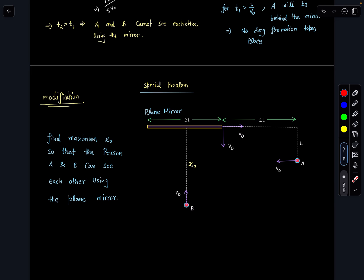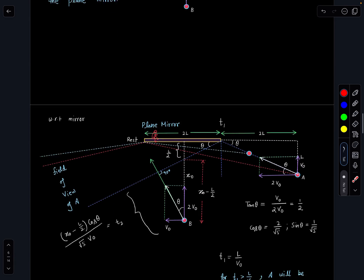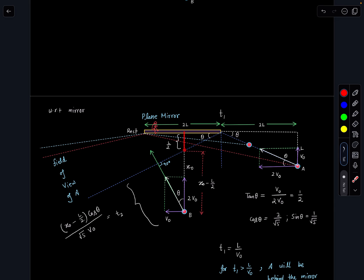I am asking the maximum value of x₀ so that person A and B can see each other using the plane mirror. The same concept, same ray diagram, everything is the same, only this distance is going to be x₀. The maximum value only we have to calculate so that we can see the image. From the previous problem I can see this is L by 2, this is L, so the remaining distance is x₀ minus L by 2. This distance is going to be x₀ minus L by 2 cos theta divided by root 5 V₀, which gives time from here to here.